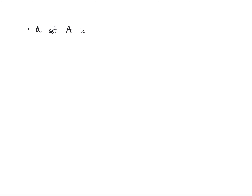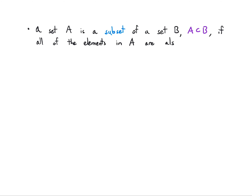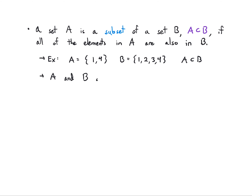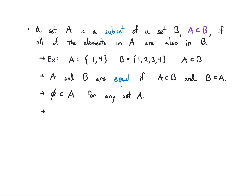A set is a subset of another set — A is a subset of B, with this notation of a U turned on its side — if all of the elements in A are also in B. So if A has {1, 4} and B has {1, 2, 3, 4}, then A is a subset of B. We say that A and B are equal if they're both subsets of one another, meaning they contain the same elements. By default, the empty set is always a subset of A for any set A, and any set A is a subset of the universal set.